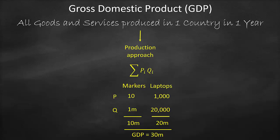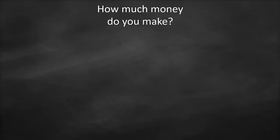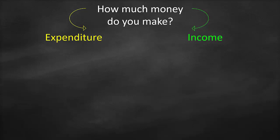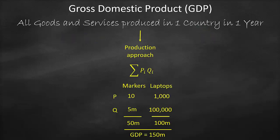That was our first approach — the production approach. To understand the other approaches, consider this analogy: if I want to know how much money you make, I could look at your expenditure — if you spend on luxurious items, you likely make a lot. That's the expenditure approach. Or I could look at your payslip to see your income — that's the income approach.